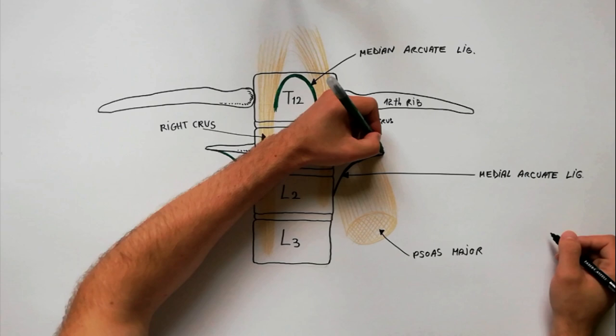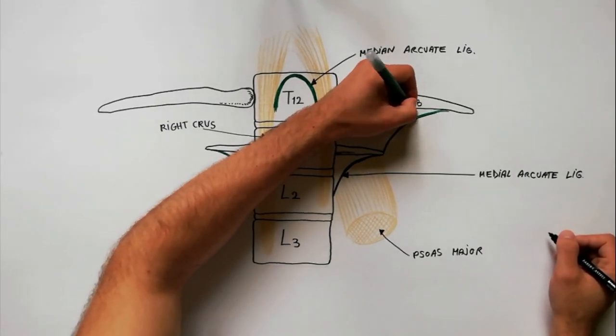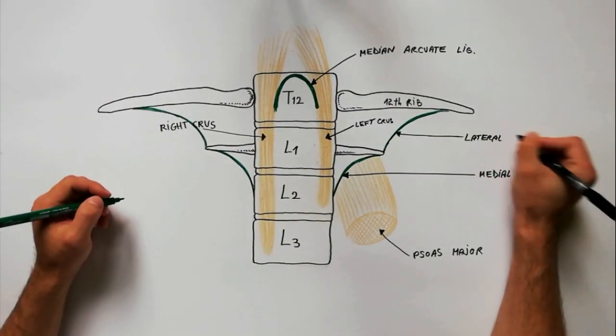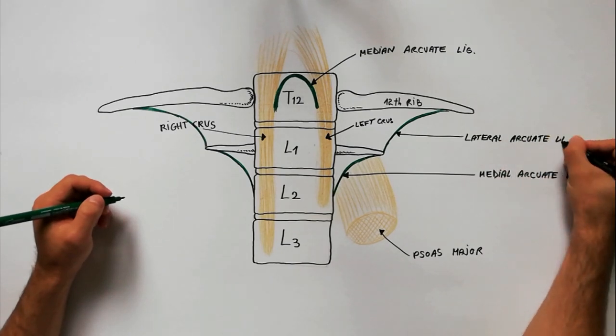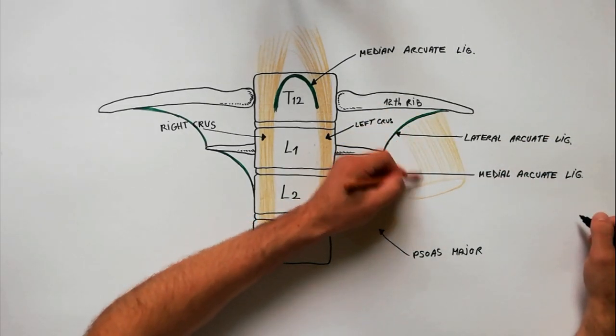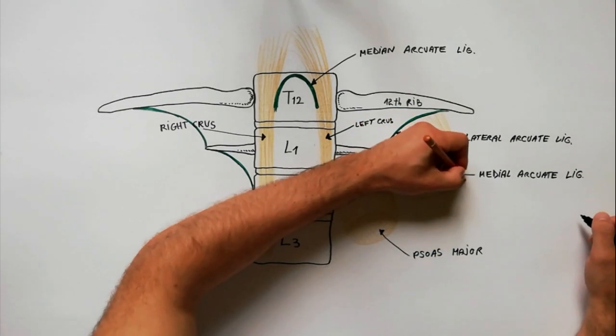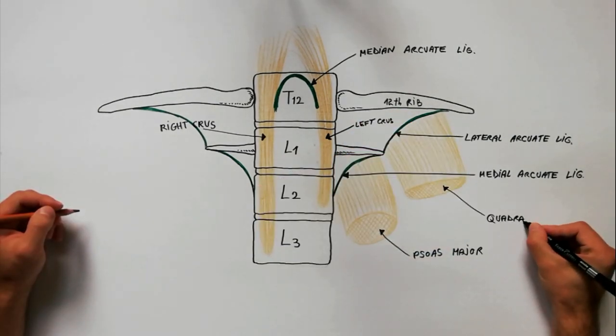The lateral archoid ligament extends from the tip of transverse process of L1 vertebra to the twelfth rib. This ligament arches over the quadratus lumborum muscle.